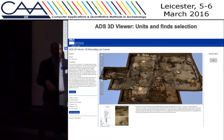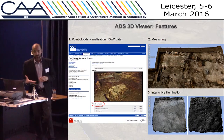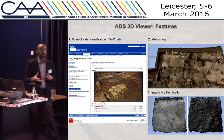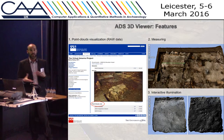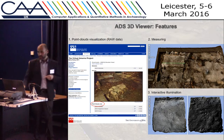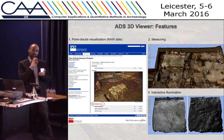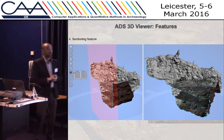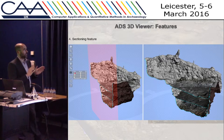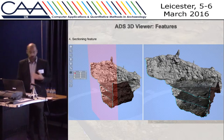Other interesting tools in the ADS 3D viewer include the ability to visualize point clouds, not just meshes — important because raw data from laser scanners archived in ADS is point clouds. There is also a measuring tool that lets you take measurements on the model, an interactive illumination tool to change lighting and better visualize particular elements, and a sectioning feature that allows you to create dynamic sections along the three main axes of the viewer. I will show this in the live demo.